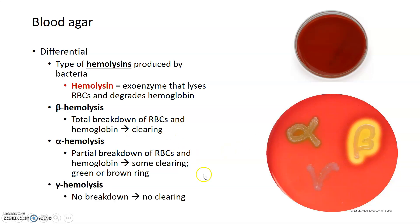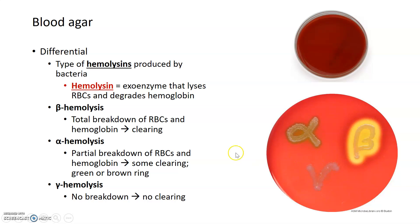Finally, some bacteria are unable to break down red blood cells or hemoglobin. While they can grow on blood agar, there is no clearing around them. That is what's known as gamma hemolysis. By looking at a blood agar plate, you can deduce the hemolytic activity of a particular bacterium.